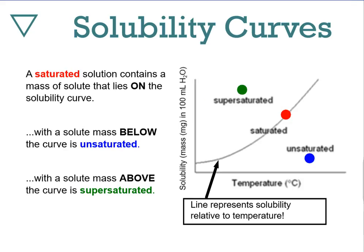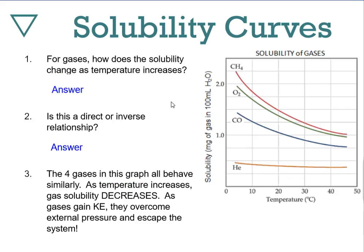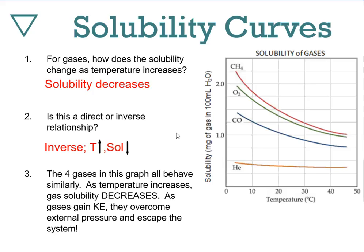Let's talk about gases. As temperature increases, gas solubility decreases — this is an inverse relationship. The four gases in this graph all behave similarly: as temperature increases, gas solubility decreases. As gases gain kinetic energy, they overcome external pressures and escape the system. Normal atmospheric pressure is what allows gases to be soluble at room temperature — keep that in mind.